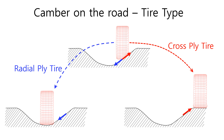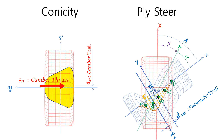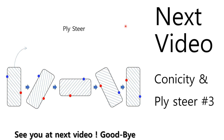If you watched the previous videos, you can easily understand the upcoming videos. In the previous video, E27, I explained the different performance depending on tire types — radial tire and cross-ply tire — for the camber of road unevenness. Recently I explained the introductory part of conicity and ply steer. The next video will be conicity and ply steer part 3. See you in the next video. Goodbye, guys!